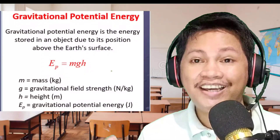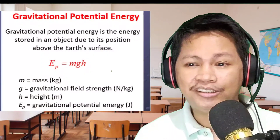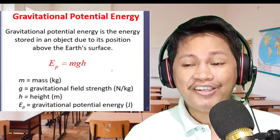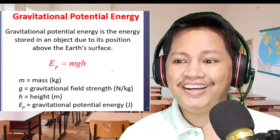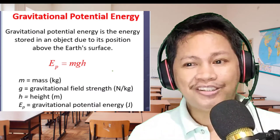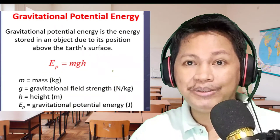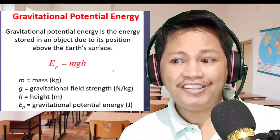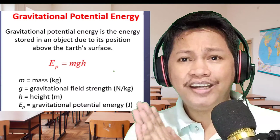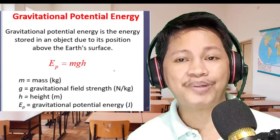Our topic focuses on gravitational potential energy. Gravitational potential energy is the energy stored in an object due to its position above the Earth's surface. The main difference from general potential energy is that gravitational potential energy specifically relates to an object's position — its height above the Earth's surface. Because of that, it gives rise to a specific equation.